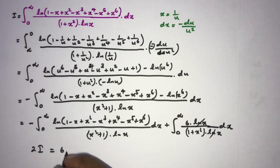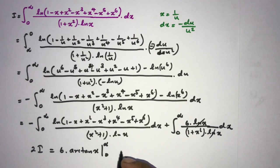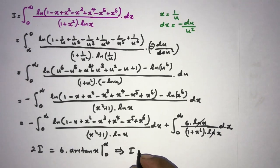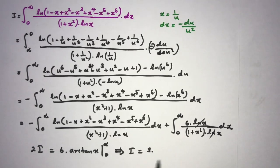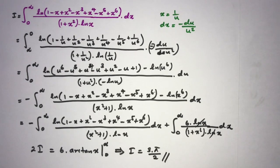We recognize the integral of 1 over (1 + x²) as arctan(x), evaluated from 0 to infinity. With the factor of 6 and 2I, the 2 cancels leaving I equals 3 times arctan evaluated at infinity, which gives pi over 2. So I equals 3 times pi over 2, which is the final answer. If you like this video please subscribe to the channel, thank you for watching.